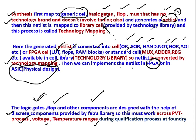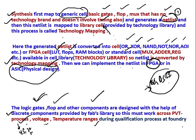All logic gates, flops, and other components are designed with discrete components — the cells provided by the cell library. These must work across PVT — Process, Voltage, and Temperature — ranges during the qualification process at the foundry. At the end, the GDS2 file is sent to the foundry for chip fabrication, and the circuit must work across all process, voltage, and temperature variations.